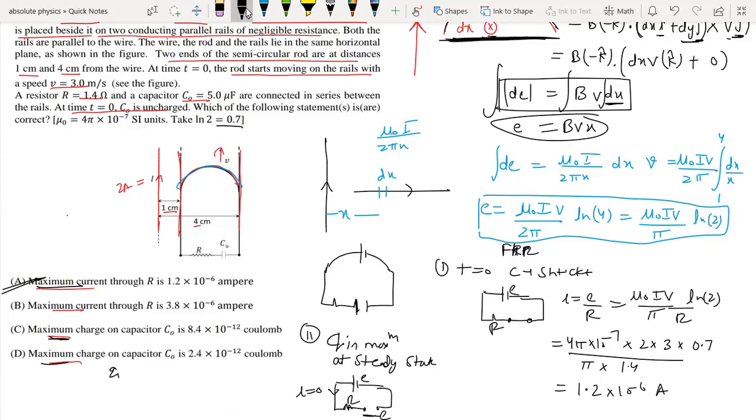The maximum charge equals Q_max = C×E, where C = 5×10⁻⁶ F.